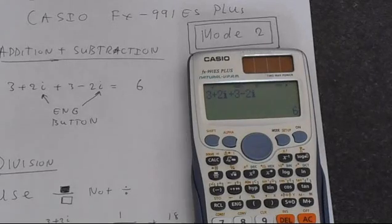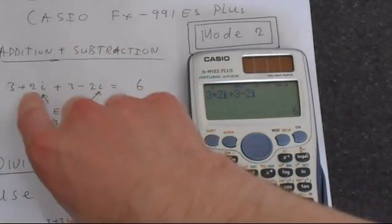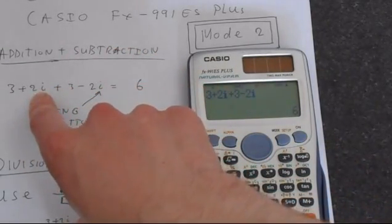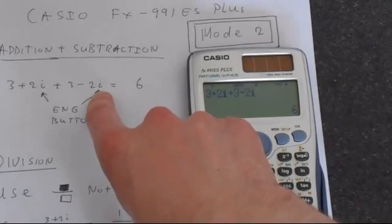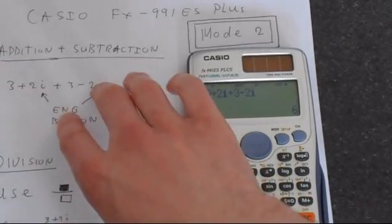This shouldn't come as a surprise, because you've got plus 2i and then minus 2i. So they're going to cancel, and then just 3 plus 3.